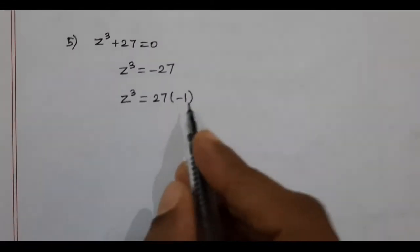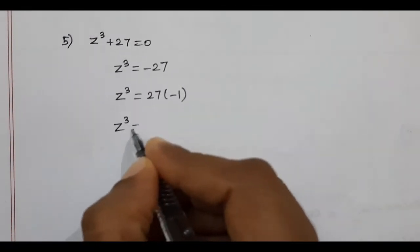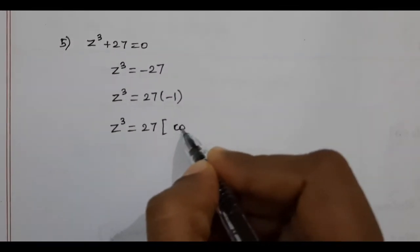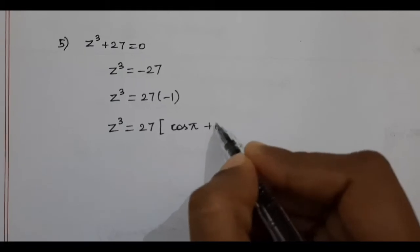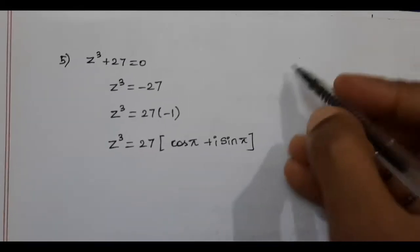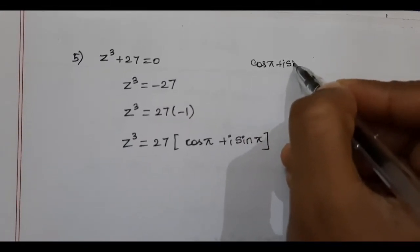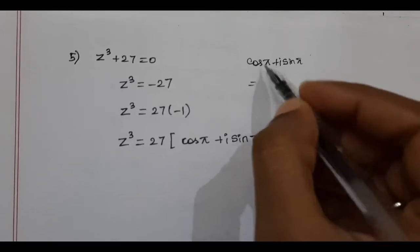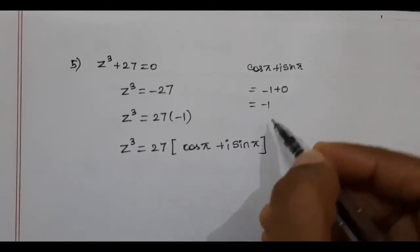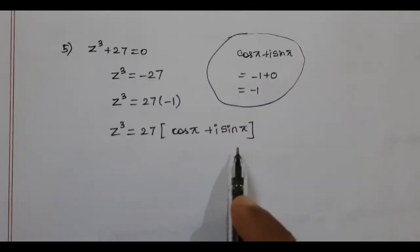Now, we write −1 in polar form. We know that cos π + i sin π = −1, because cos π = −1 and sin π = 0. So −1 can be written in polar form as cos π + i sin π.